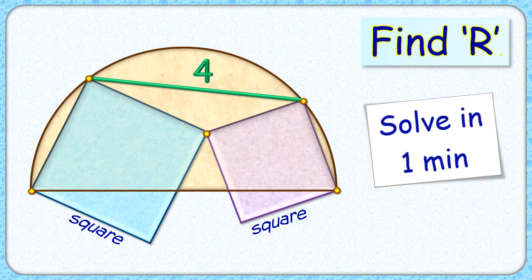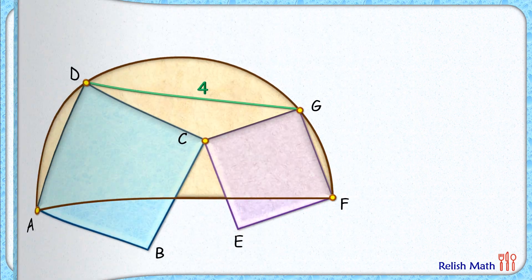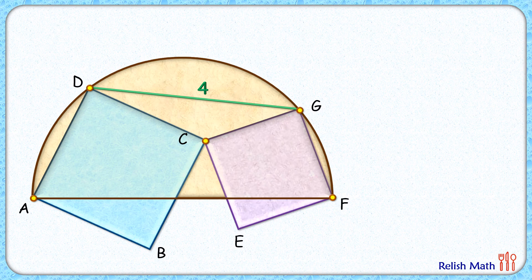Let's check this interesting solution. The fun part is we can solve it in one minute. Here, this angle G is 90 degrees, and we know that any chord subtending angle 90 degrees has to be a diameter.